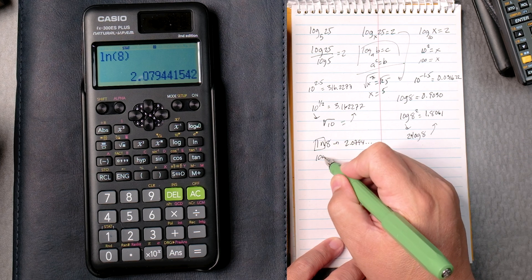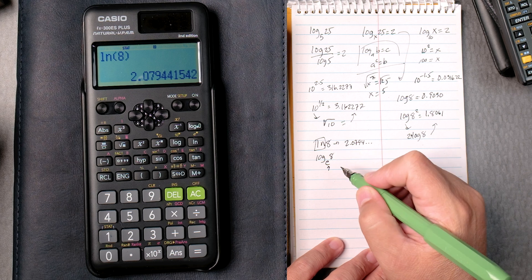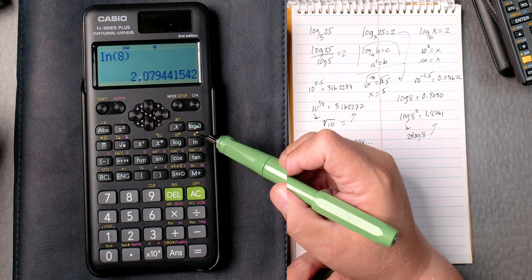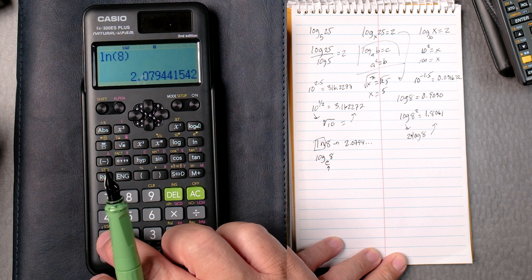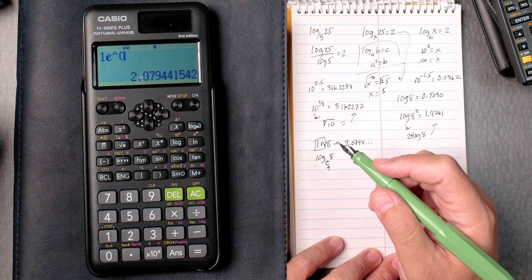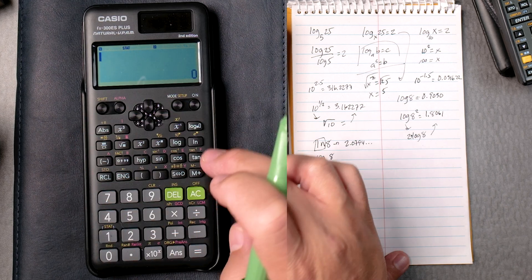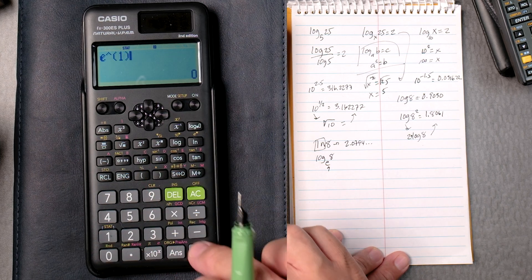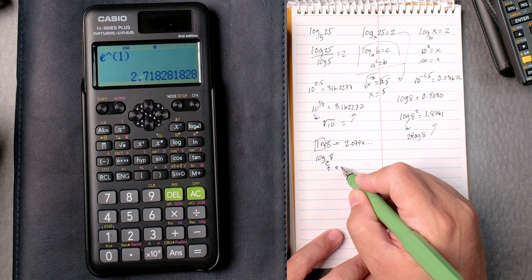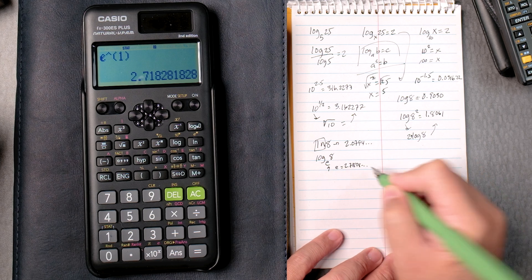Natural log really is the log of base 8. What is E? E is over here. E to the blank. So if we type in 1, shift, natural log key. The other way around. Natural log first. Sorry about that. Then the 1. And then equals. So E is equal to 2.71828. And it keeps on going.